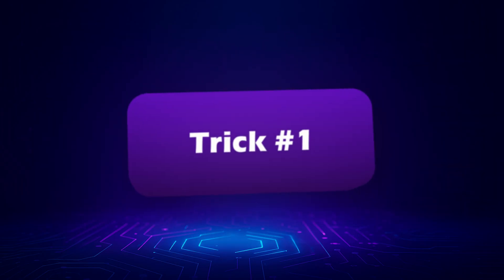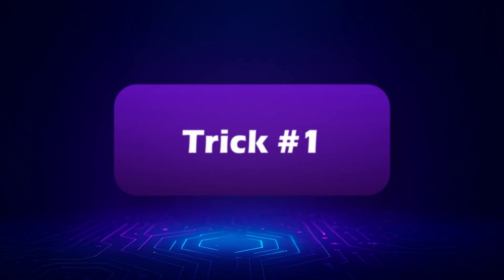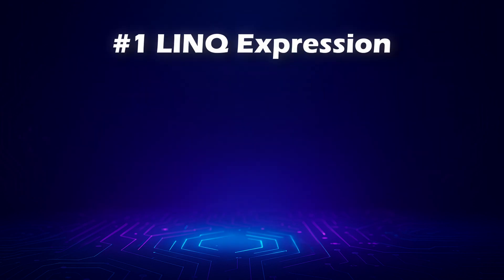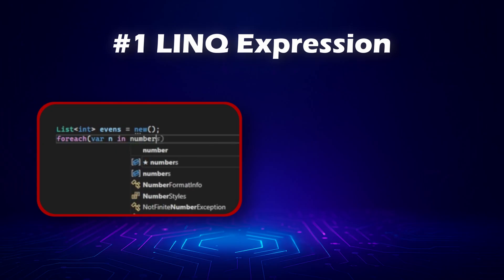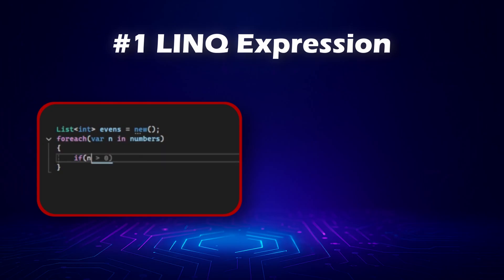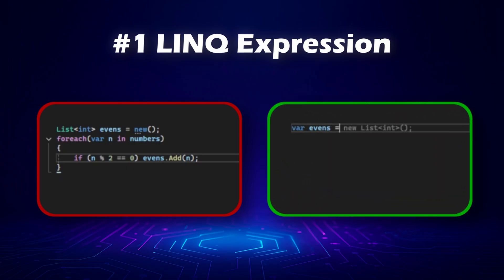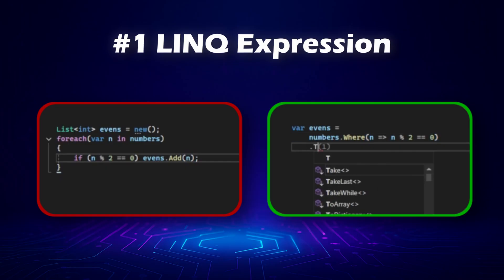And finally, trick number 1 — one of my personal favorites: LINQ expressions. LINQ can make your collections much easier to work with and your code more concise. Here's the old-school way to get even numbers from a list — it works, but it's verbose and you have to manually write a loop. Now let's do it the LINQ way. That's much shorter, cleaner, and easier to read. We filter and collect the results in one line.